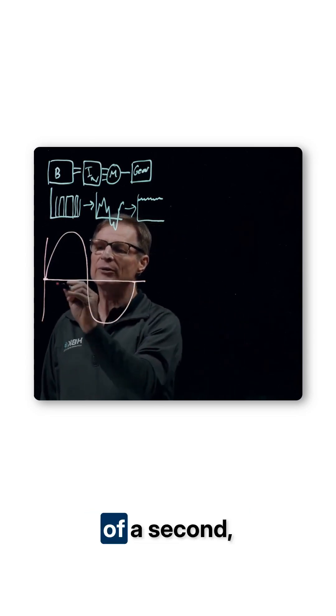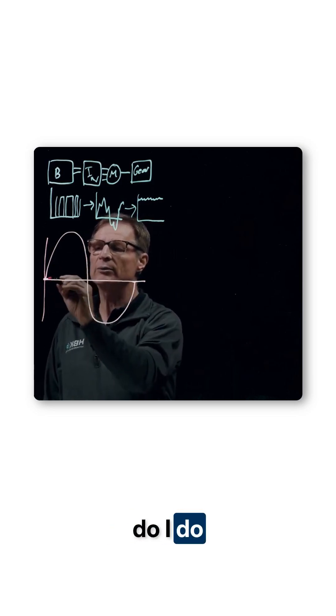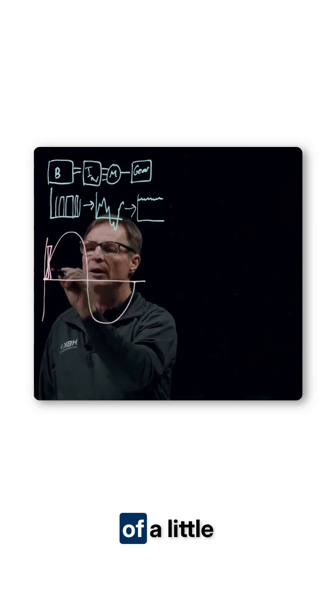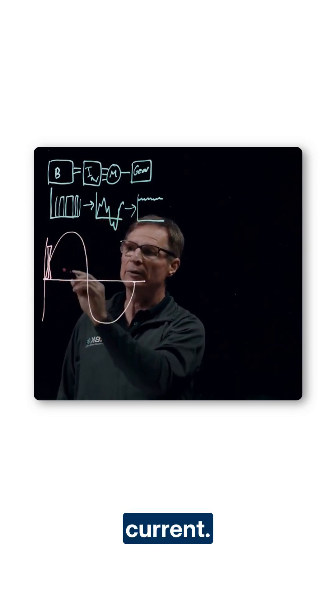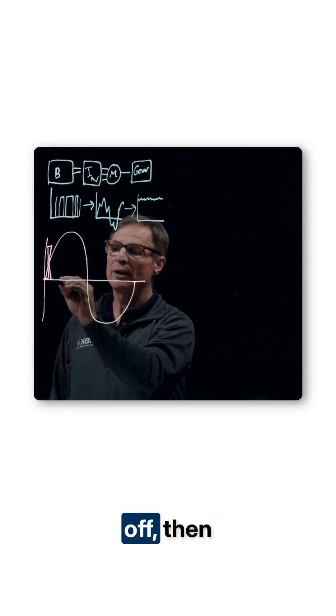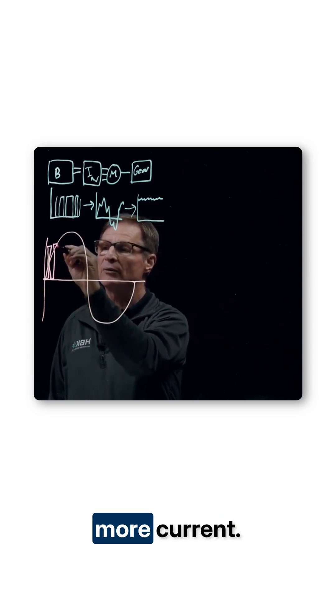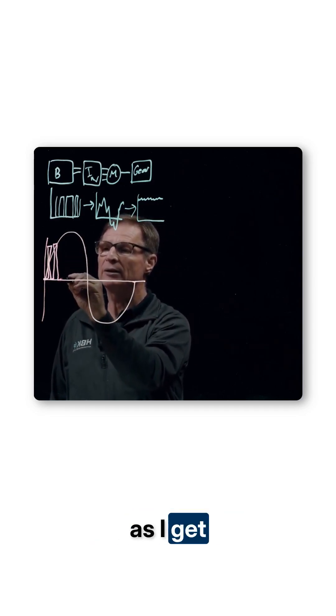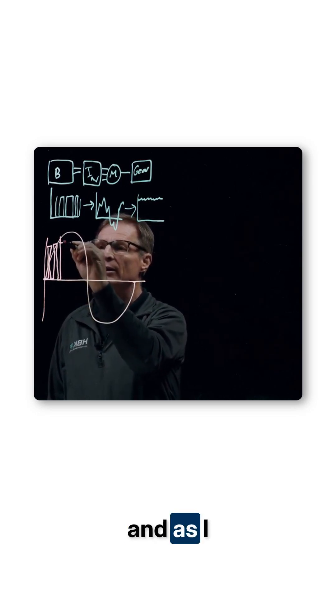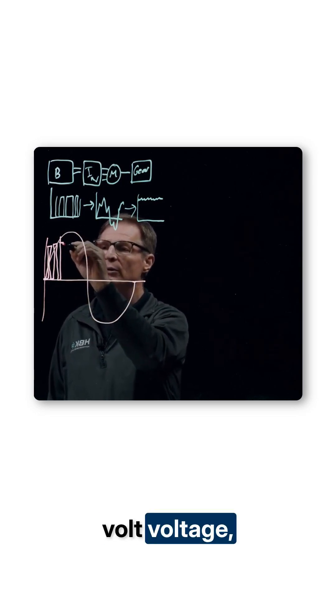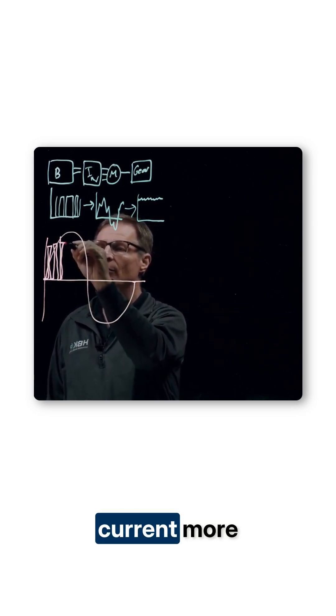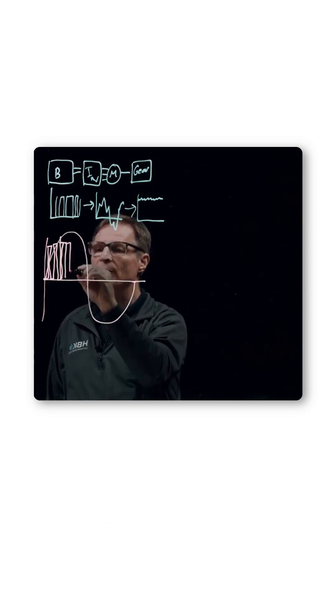In a ten-thousandth of a second, it comes along and it goes, what do I do now? Oh, I'm going to turn on and produce a little bit of current, and then I turn off, then I come on, I produce a little bit more current, and then as I get into the meat of my voltage, I produce current more and more and more often.